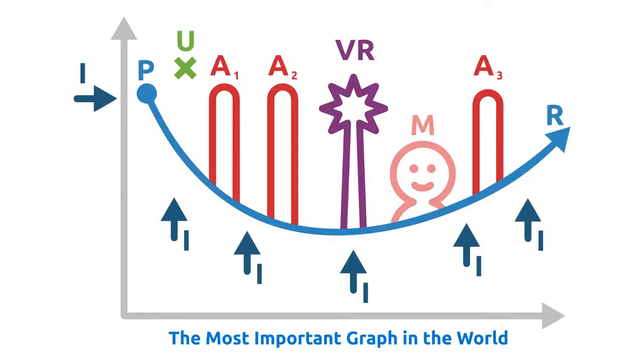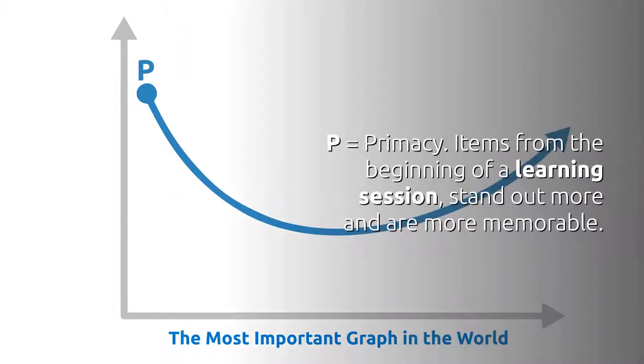The graph shows that during the learning process the human brain remembers things in the following way. P equals primacy. Items from the beginning of a learning session stand out more and are more memorable.